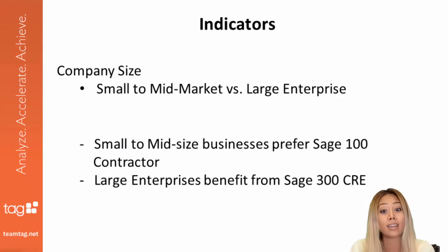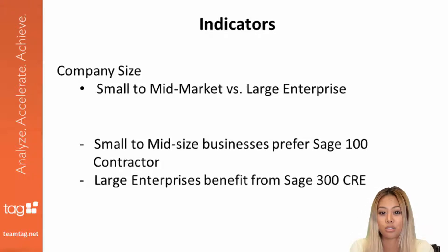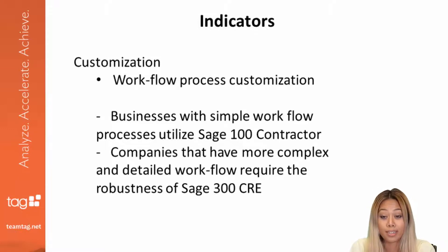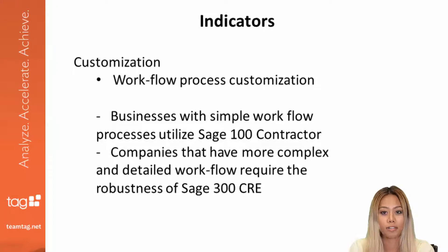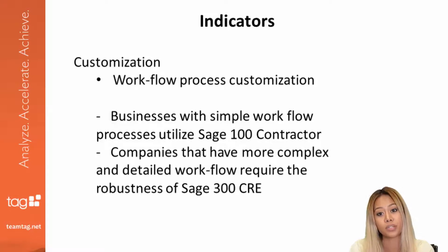For example, company size. Oftentimes, small to mid-sized businesses utilize SAGE 100 Contractor more commonly, whereas large enterprises are often the companies that choose SAGE 300 Construction Real Estate. This isn't always the case, but many times this is a good place to start. How much workflow customization does your company need? Companies that are more complex and detailed often require the robustness that SAGE 300 CRE offers, but if the processes within your company are fairly simple, then I would recommend you look to see if SAGE 100 Contractor will accomplish what you need.